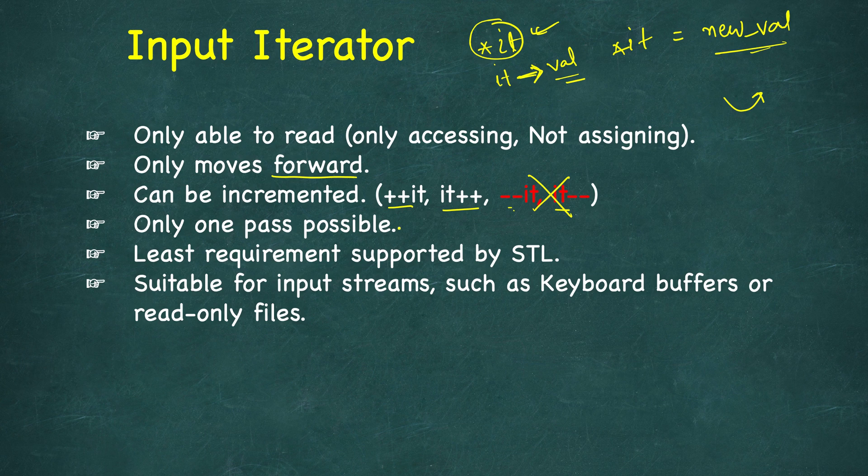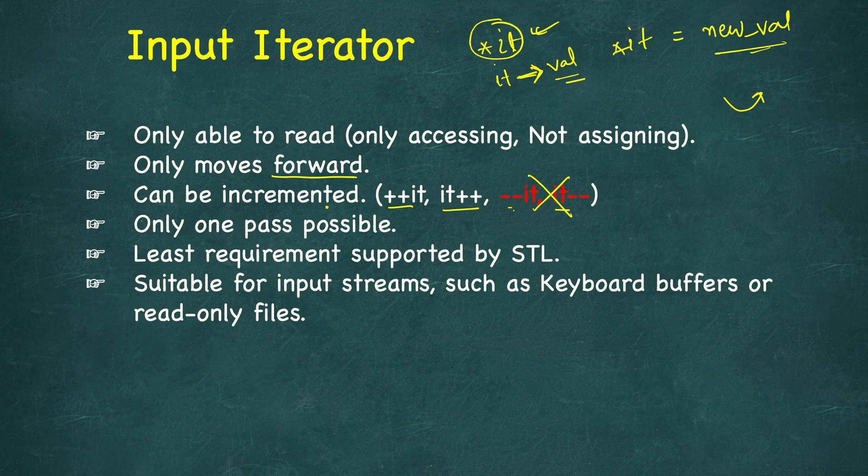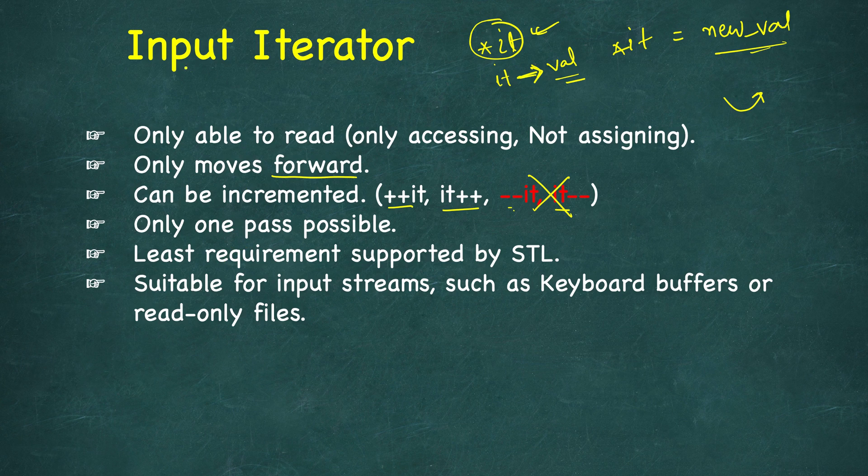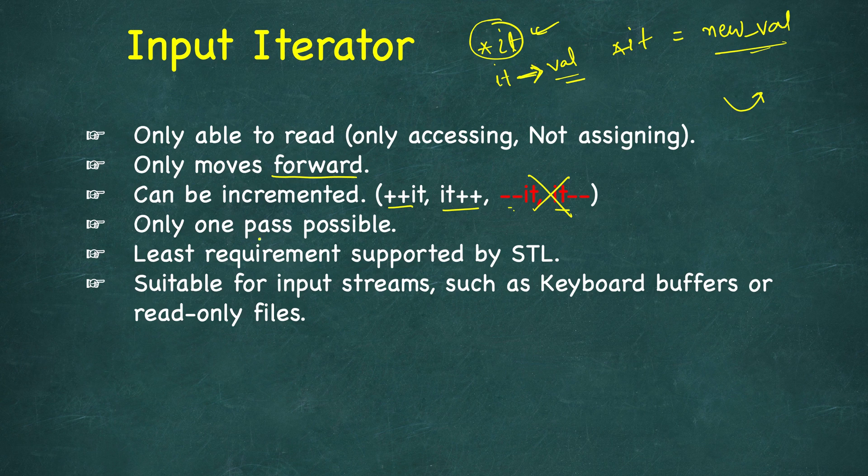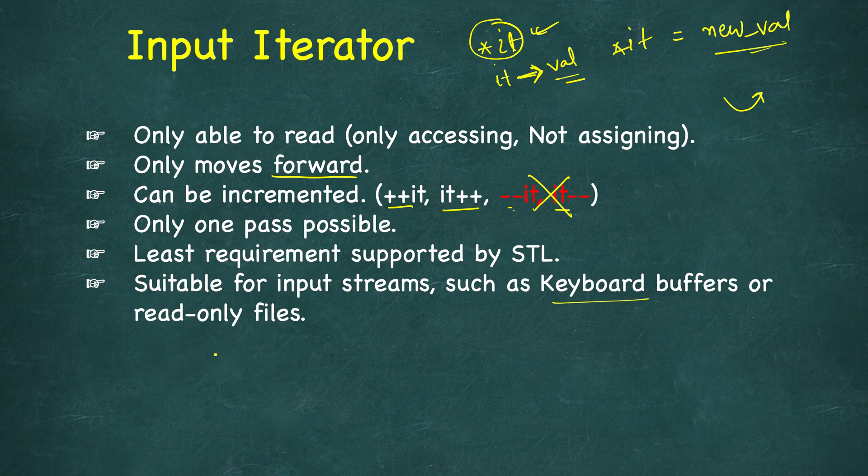Only one pass is possible with input iterators. If you require an algorithm where you need multiple passes, this would not be suitable. This is one of the iterators, along with output iterator, which has the least requirement supported by STL - the least capabilities required to implement them. These are suitable for input streams such as keyboard buffers or read-only files.